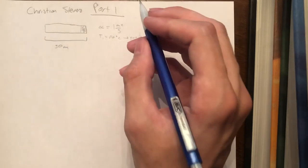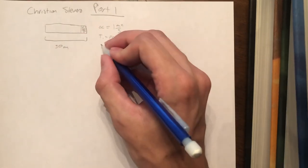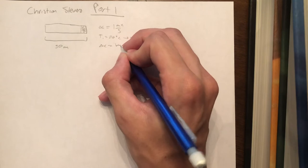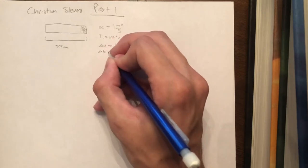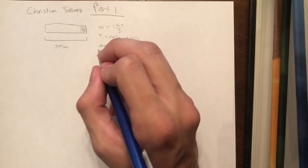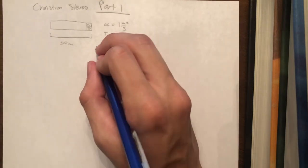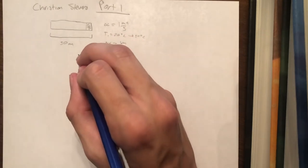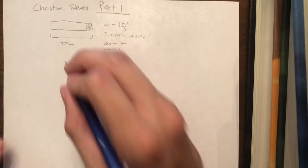We're trying to find out how the temperature changes across the bar. We also know that Δx is equal to one meter, and we know that Δt is equal to one second. So we are going to apply the Crank-Nicolson equation.